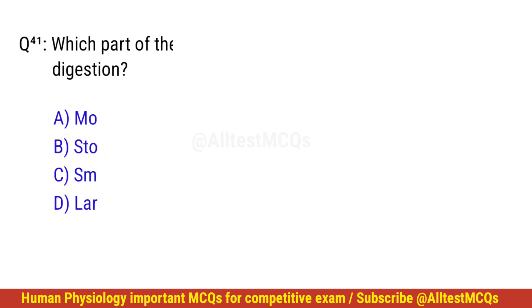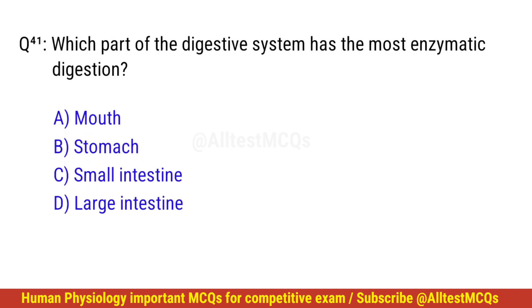Question number 42. Which part of the digestive system has the most enzymatic digestion? The right option is C: Small intestine.